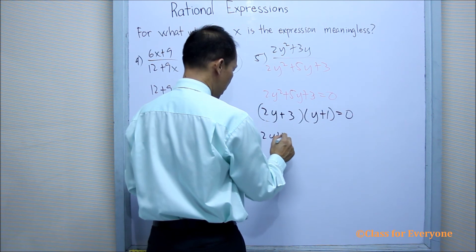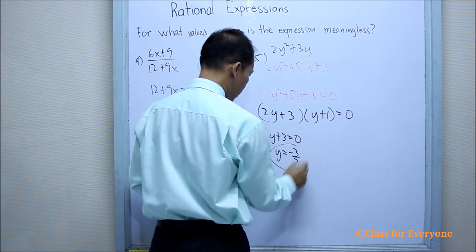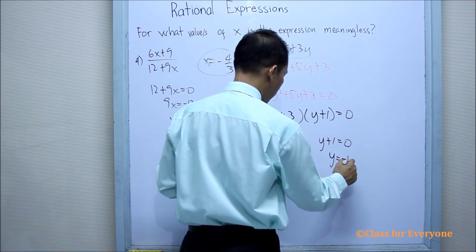So here, 2y plus 3 equals 0. Therefore, y is equal to negative 3 halves. And y plus 1 equals 0. Therefore, y is equal to negative 1.